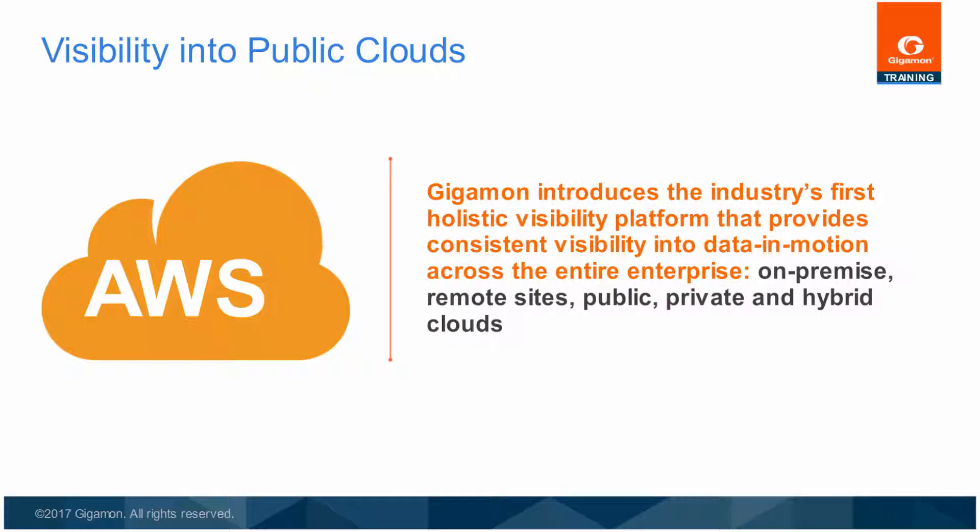Gigamon introduces the industry's first visibility solution for the public cloud with support for Amazon Web Services. With their IaaS offering, AWS provides on-demand computing resources and services in the public cloud. You can run a server on AWS that you can log into, configure, secure, and run just as you would a physical server at your office. With AWS, you can upload the Gigaview FM Fabric Manager, and after initially setting up the virtual private clouds, VPCs, subnets, and security groups or firewalls dedicated to your account, you are ready to make connections and monitor sessions. The Gigamon Visibility Platform provides consistent visibility into data in motion across the entire enterprise — on-premise, remote sites, public, private, and hybrid clouds.